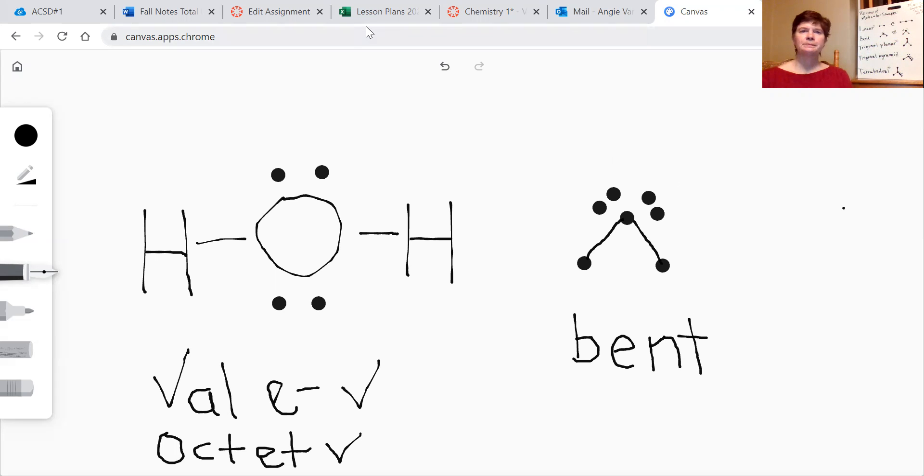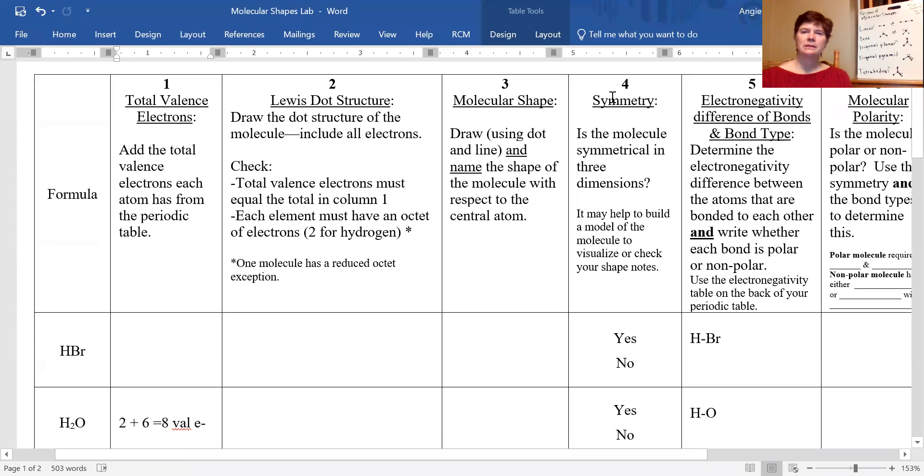Now let's go back to the shapes lab where it asks us for column 4 to determine whether or not this is symmetrical. Is the molecule symmetrical in three dimensions? It may help to build the molecule. You can do that if you have access to a molecular model kit or check your shape notes. We're going to actually use the notes behind me and you can look at your class notes as well. And remember that anything that has lone pairs cannot be symmetrical.